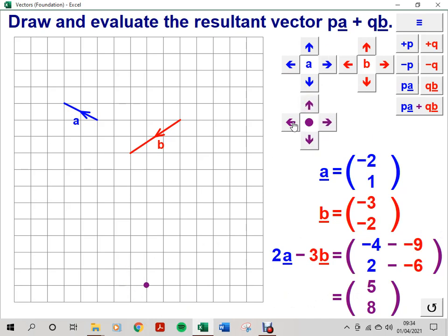So 2A, or 2 lots of vector A, from the start point looks like this. And I've added an appropriate vector label.